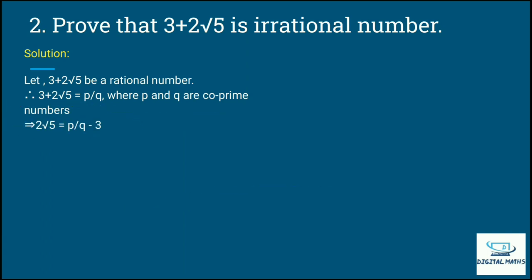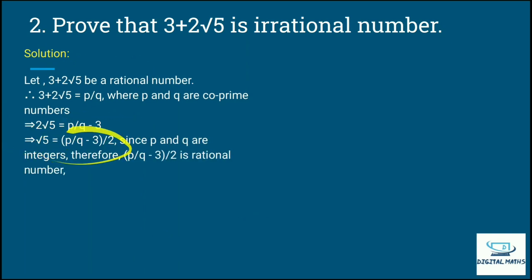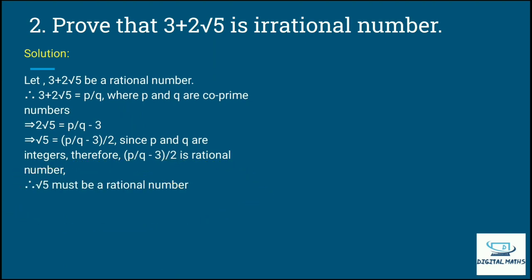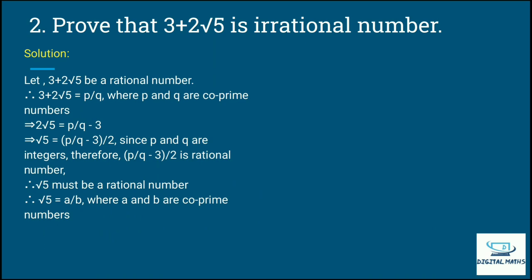Rational number is in p by q form — fraction form — where p and q are co-prime numbers. So 2 root 5 equals p by q minus 3, which gives root 5 equals (p by q minus 3) divided by 2. Since p and q are integers, p by q minus 3 upon 2 is a rational number. Therefore root 5 must be a rational number.